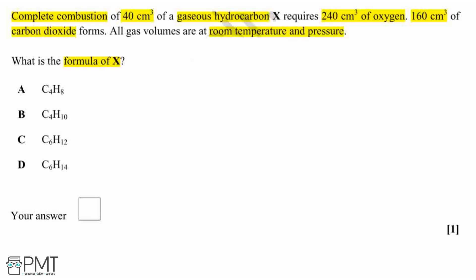So let's write out a general combustion equation so that we can identify our mole ratios and hence work out the formula of X. We've got our hydrocarbon X reacting with oxygen to produce carbon dioxide and water.